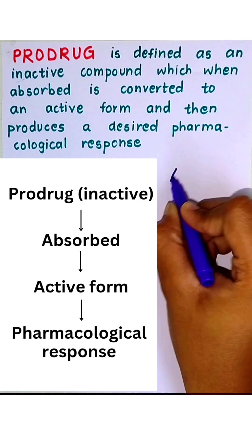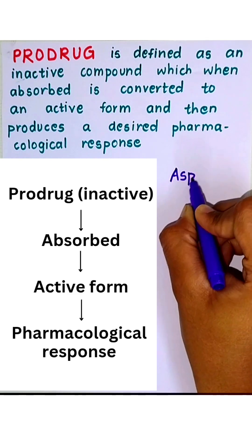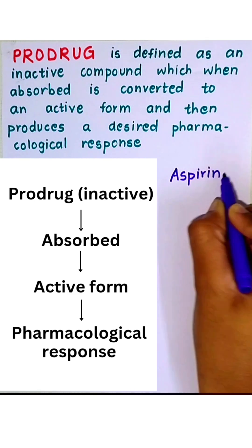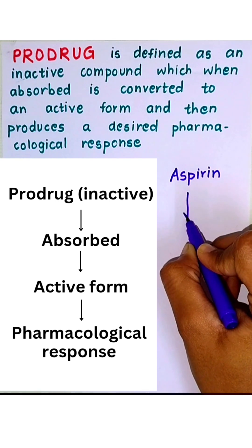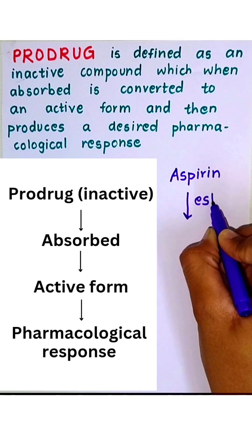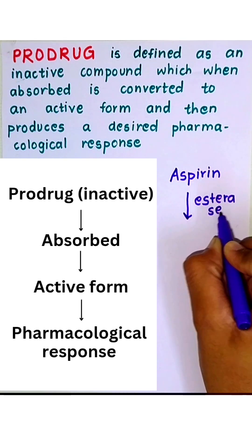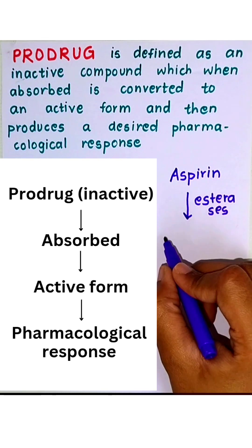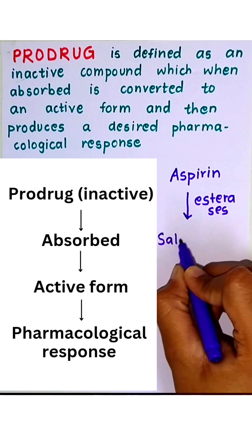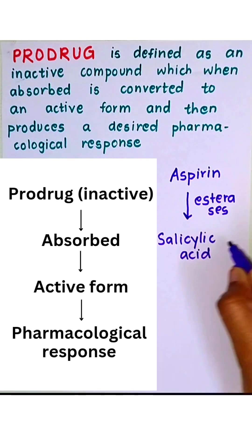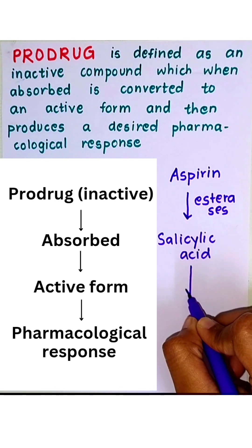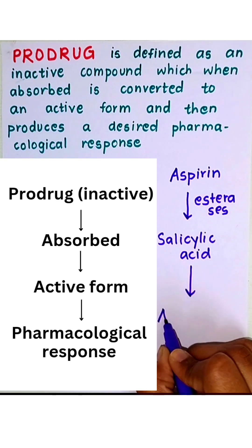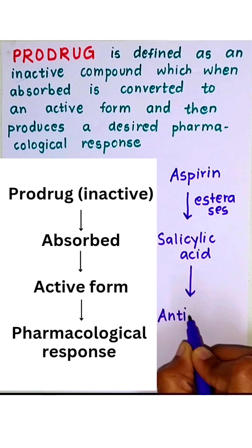Let's take the example of the drug Aspirin, which is an inactive form of a drug — that is, a prodrug — which upon the action of esterases enzyme gets converted into salicylic acid. Salicylic acid is the active form and then it shows an anti-inflammation effect.